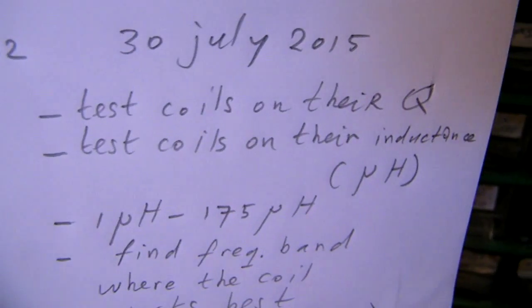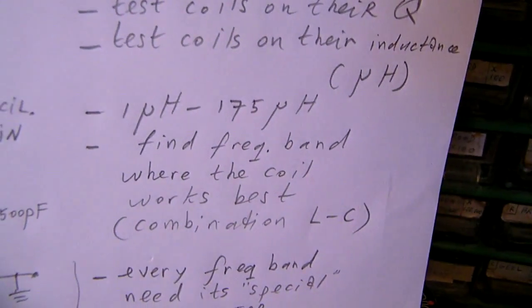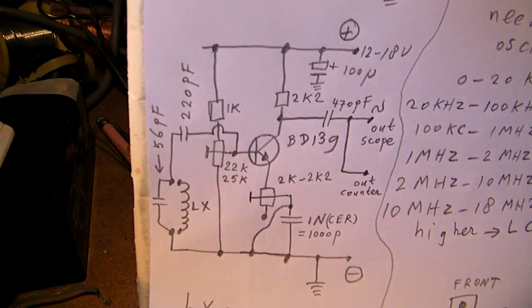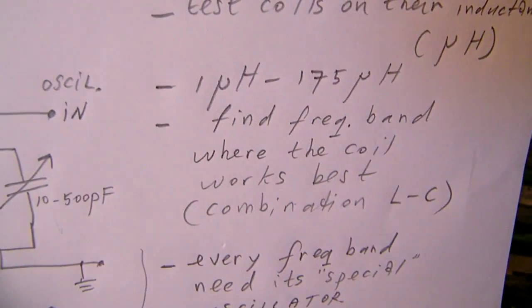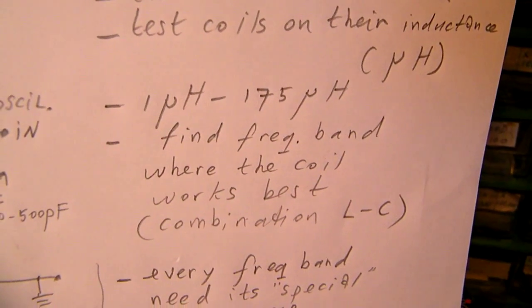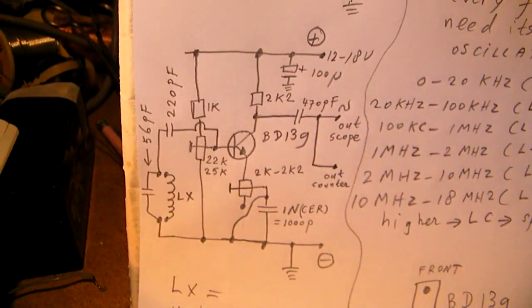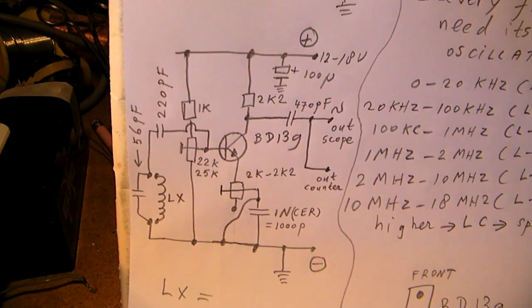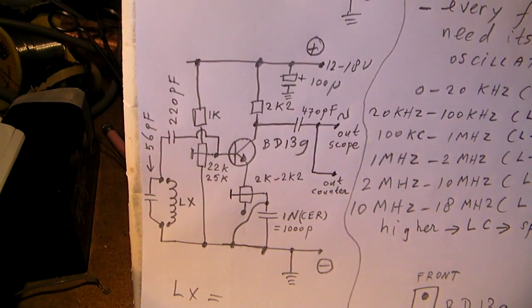So test coils on their quality, on their inductance. You can test coils with this oscillator between 1 microhenry and 175 microhenry. You can of course find the frequency band where a coil works.